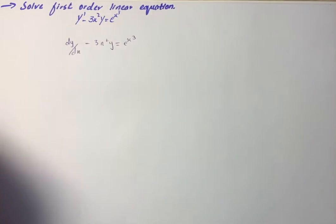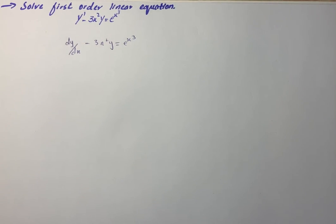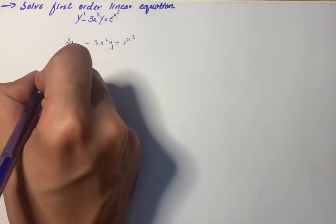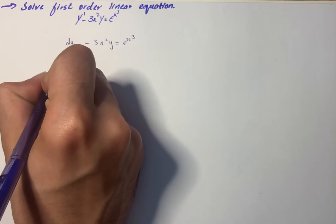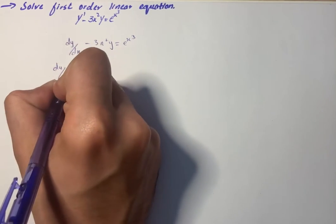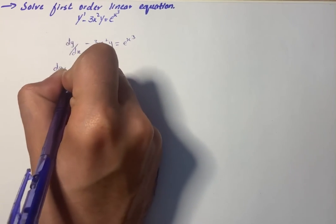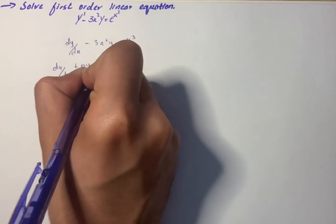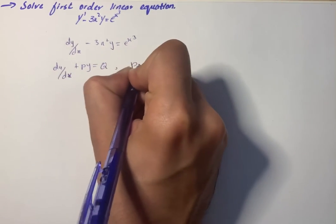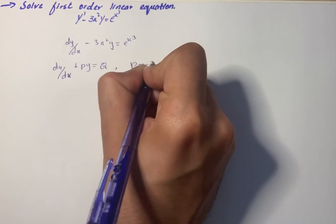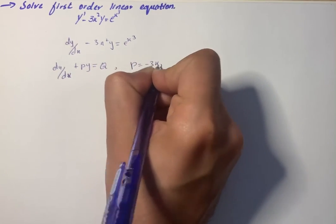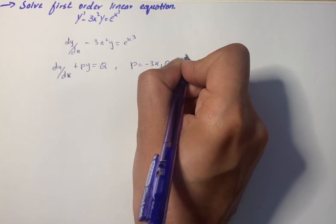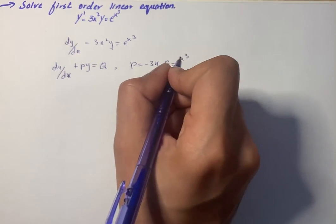We know this is in the standard form dy/dx plus Py equals Q, where P is equal to minus 3x squared and Q is equal to e raised to the power x cubed.